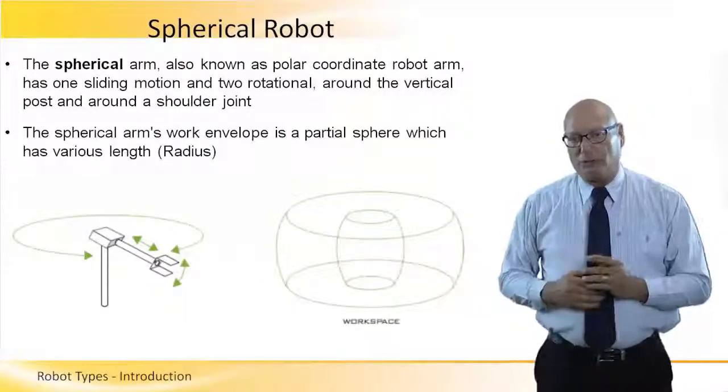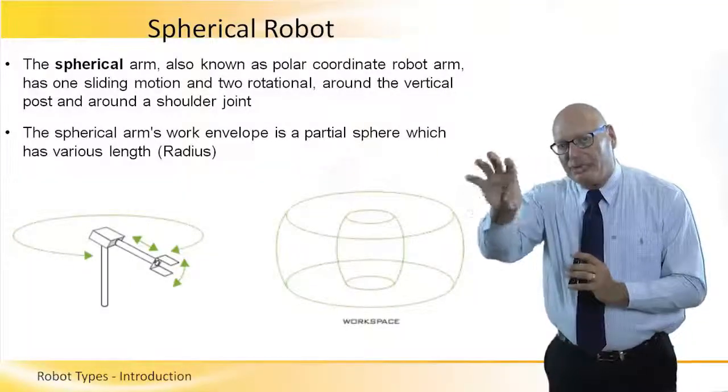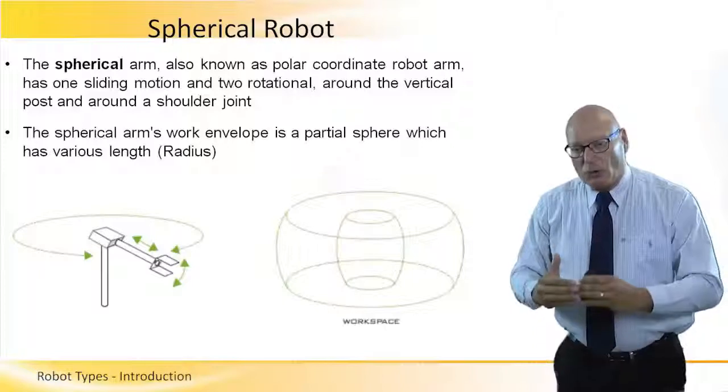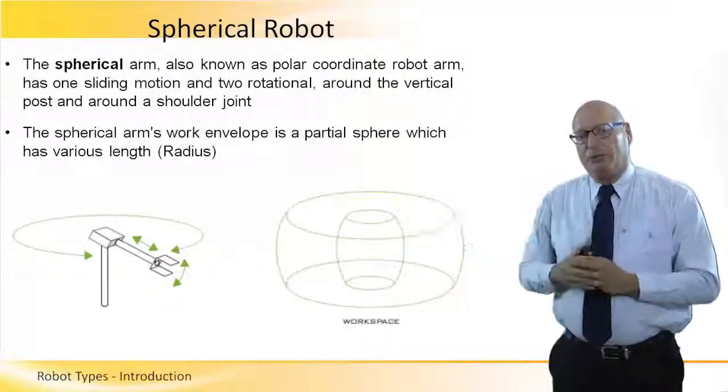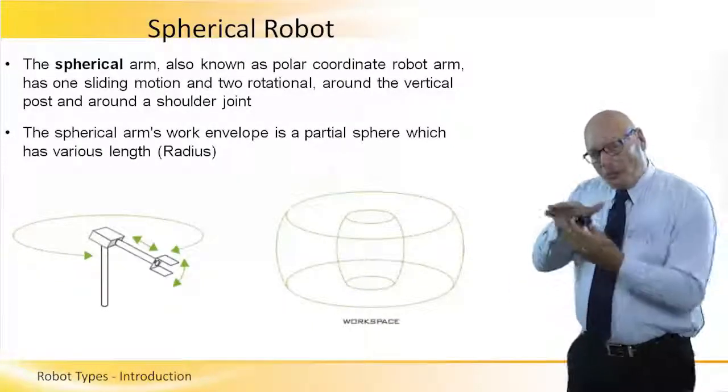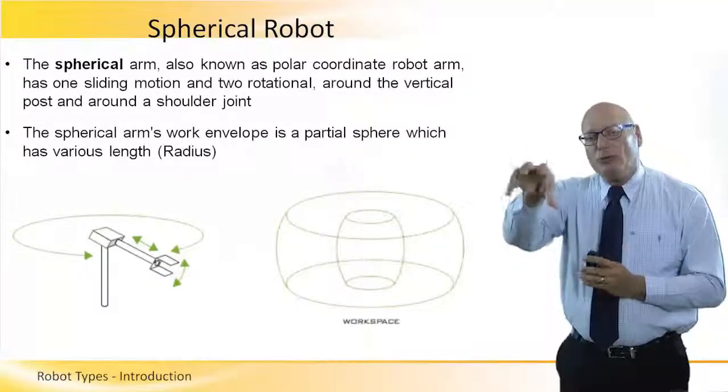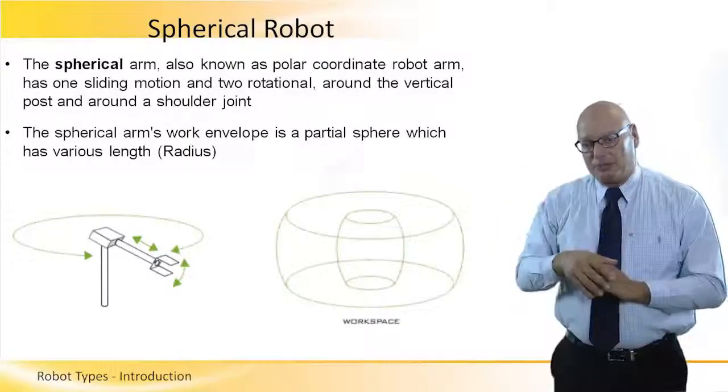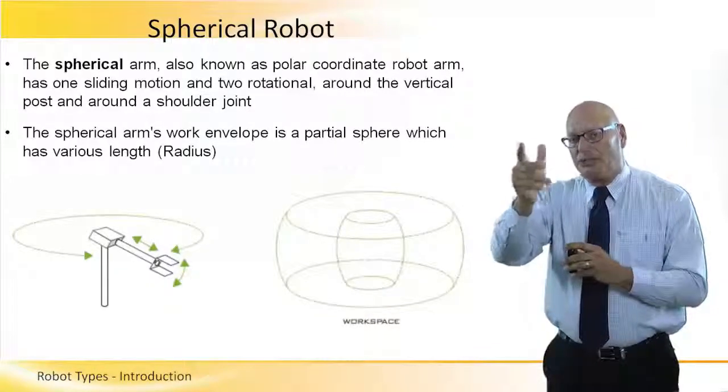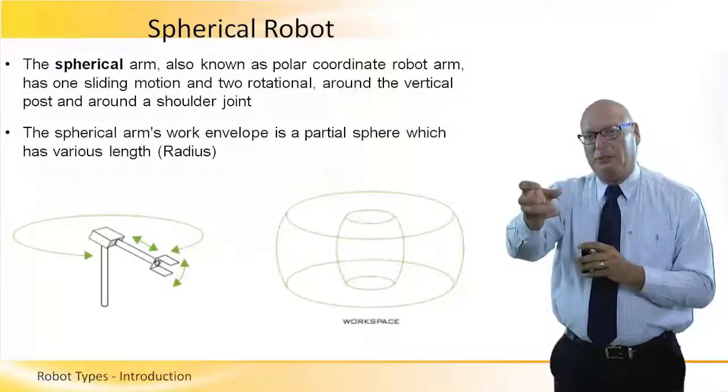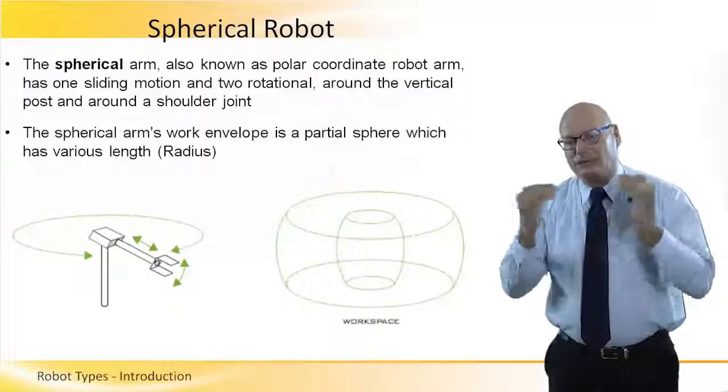Spherical robot. It's kind of similar to the cylindrical one, but here we play with the end effector. We play with the gripper. So we move rotationally all around with the number one degree of freedom. We move in and out with number two degree of freedom. And we move with the end effector. Now the end effector itself, as we said before, roll, pitch, and yaw, can actually move within. It has its own three degrees of freedom. But basically the workspace is a spherical workspace.